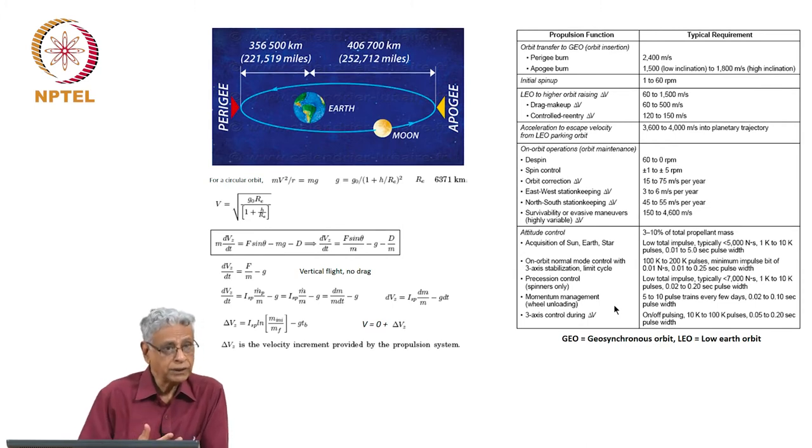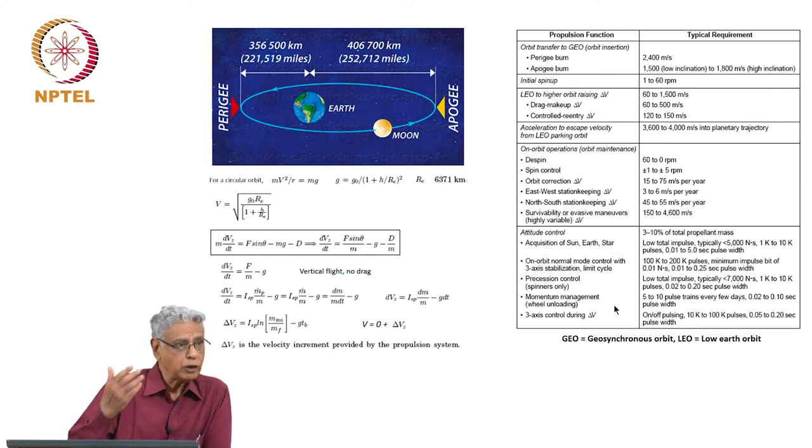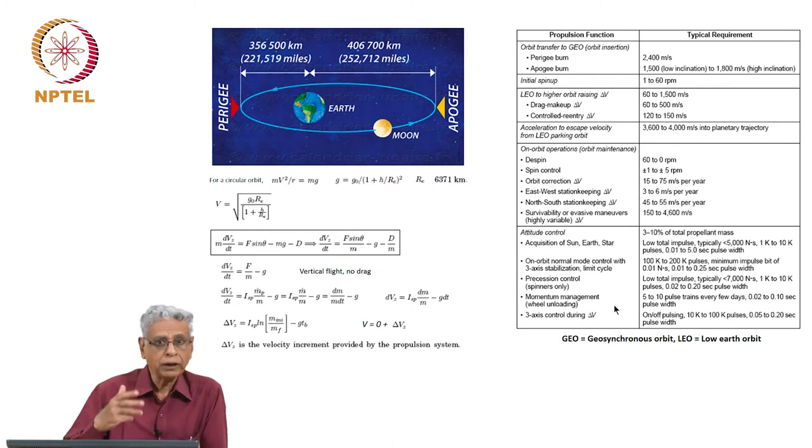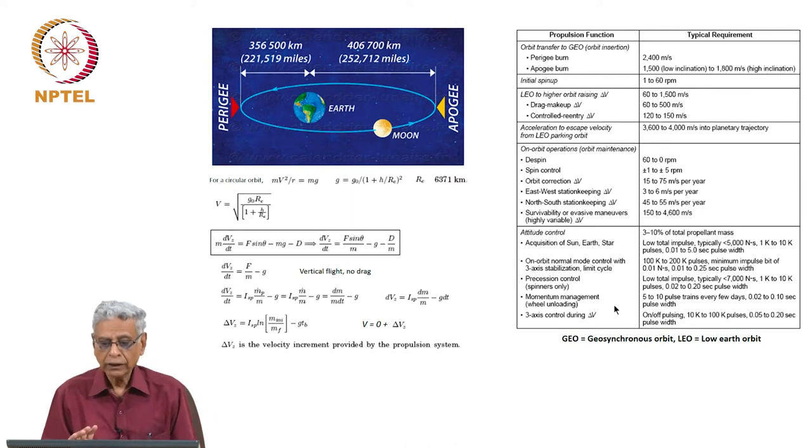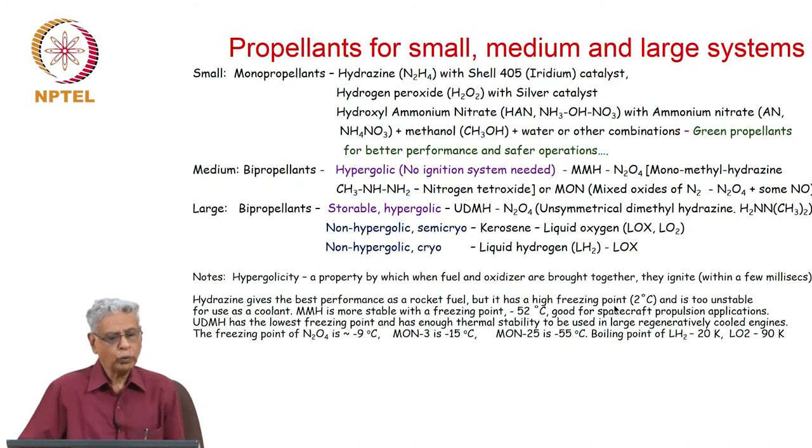This is the key equation used in mission design. Specific impulse is a very important parameter for enhancing velocity increment. If the propellant density is larger, the density impulse - that is density of propellant times specific impulse - will play an important role. On the right side, typical requirements are shown: orbit transfer 2.4 kilometers per second, apogee burn 1.5 kilometers per second and so forth.